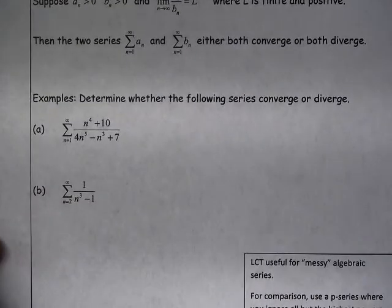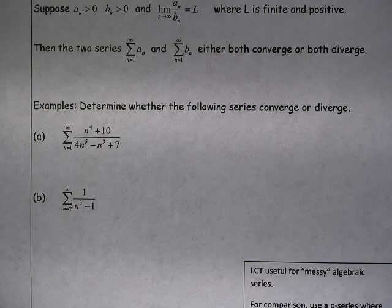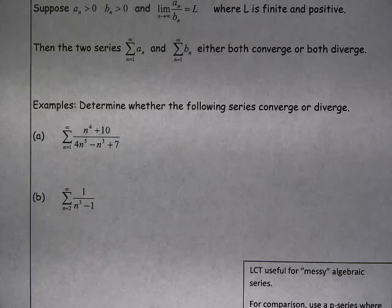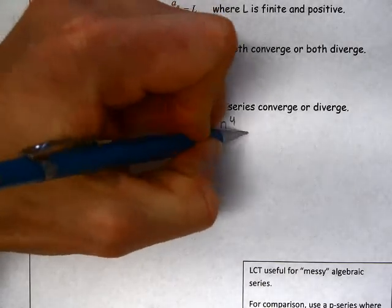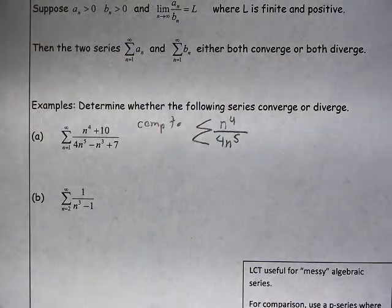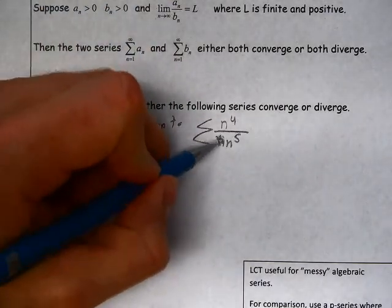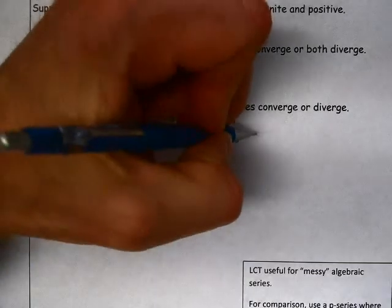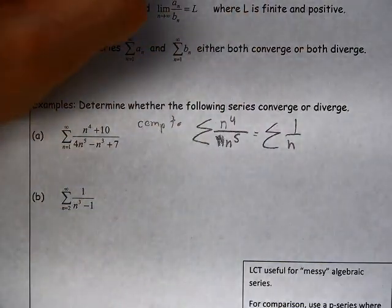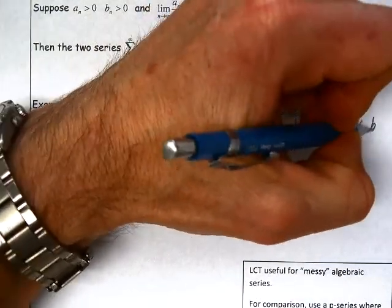Take a look at the first example: we have n to the 4th plus 10 over 4n to the 5th minus n cubed plus 7. We're going to compare this to n to the 4th over n to the 5th, which reduces to 1 over n. That's a p-series with p equals 1, so it diverges by the p-series test.